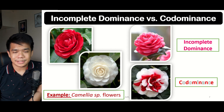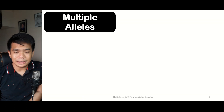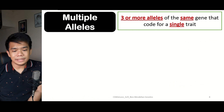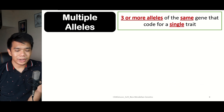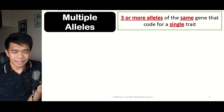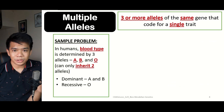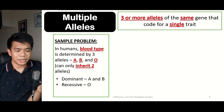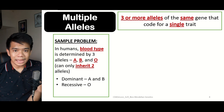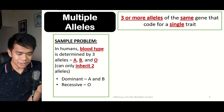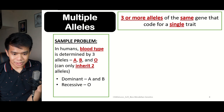Now let us proceed to multiple alleles. As the name implies, multiple alleles means three or more alleles of the same gene code for a single trait. The best example is the different blood types in humans. Blood type is determined by three alleles: A, B, or O. Both A and B are dominant traits — actually, they are co-dominant with one another — meanwhile type O is recessive.